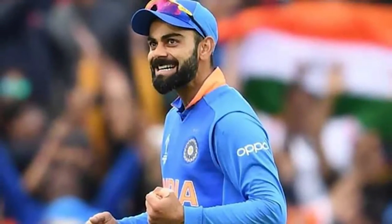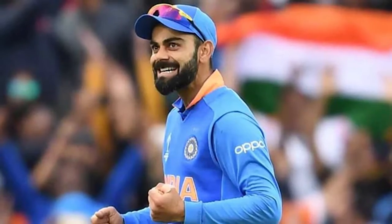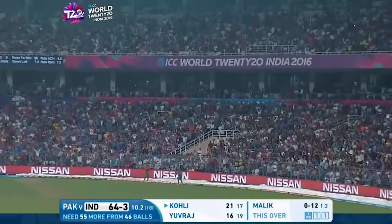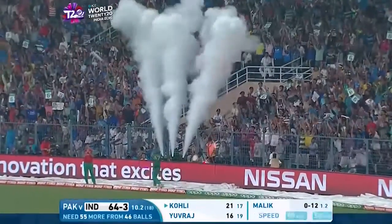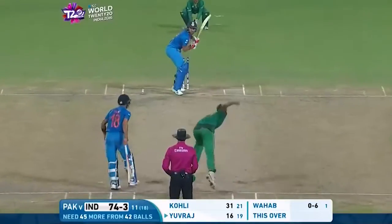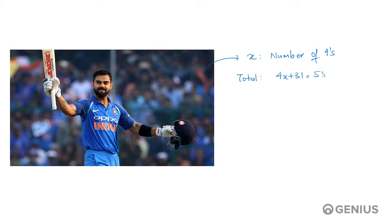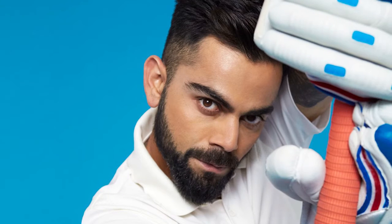Team India won this crucial match due to an awesome innings by Virat Kohli. He scored a total of 55 runs, of which only 31 runs were scored between the wickets and the remaining runs were scored due to fours. So if we say that Virat Kohli hit x number of fours, then the total number of runs scored by him is 4x plus 31 equals 55. Here x is a variable, and 4x + 31 = 55 is a linear equation in one variable.